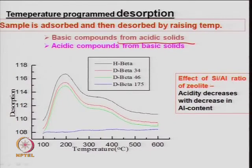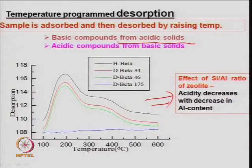The effect of silicon-to-alumina ratio: acidity decreases with the decrease in aluminum content from the framework. If you have more aluminum it will have aluminum-negative, providing a kind of Lewis acidity. When it is protonated with high silicon content, it will have higher strength of the acid site.